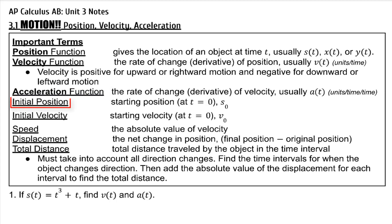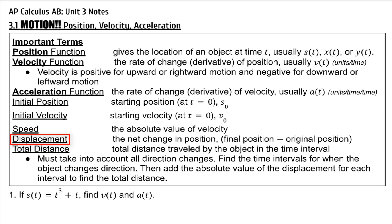Initial position is the starting position, so plug in t equals 0 into the position function. Initial velocity is the starting velocity, so plug in t equals 0 into the velocity function. Speed is the absolute value of velocity. Displacement is the net change in position.